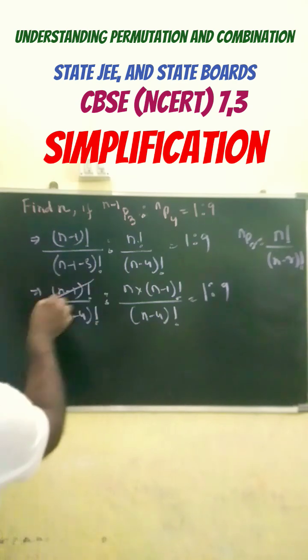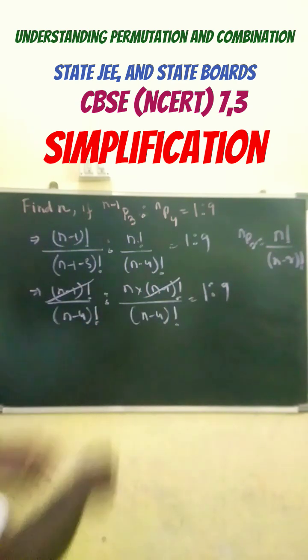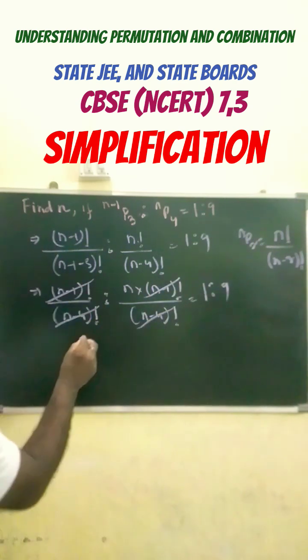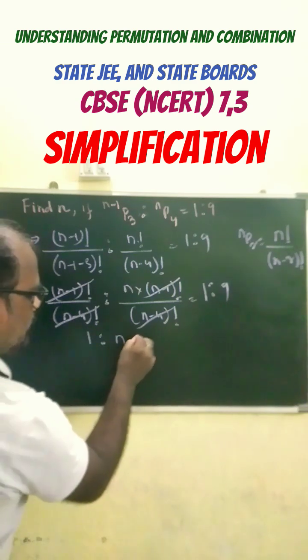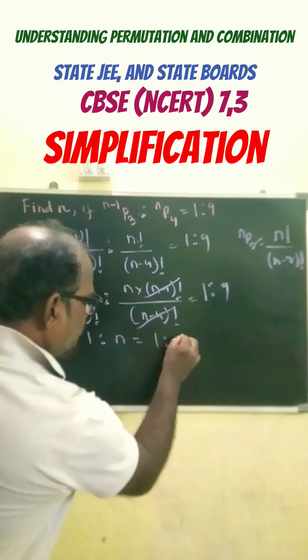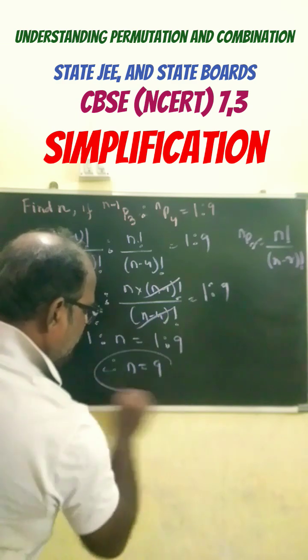See here n minus 1 factorial gets cancelled from here to here, n minus 4 gets cancelled from here to here. So finally we get 1 is to n equals to 1 is to 9, therefore n equals to 9.